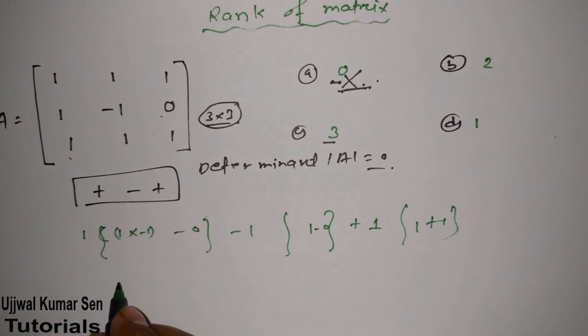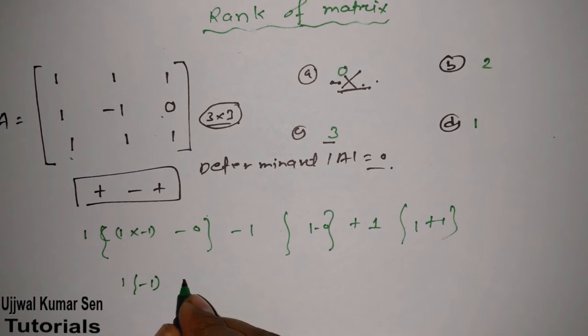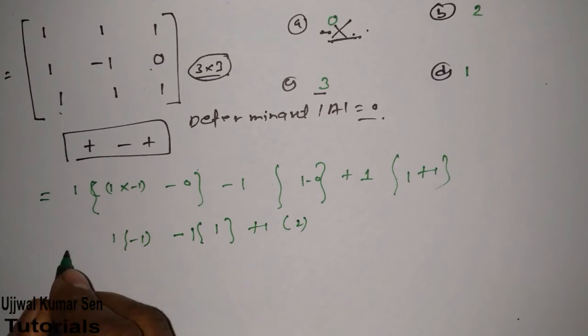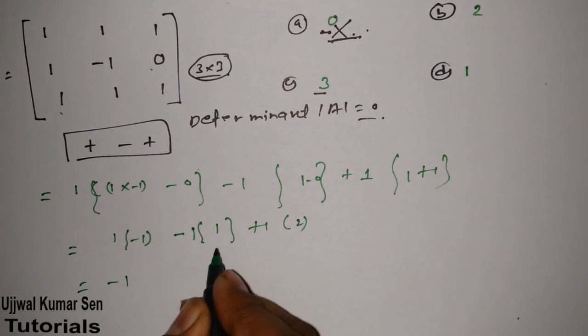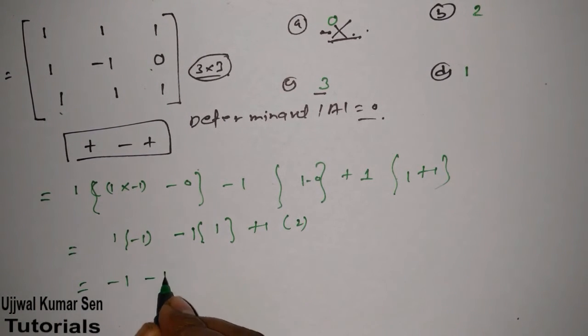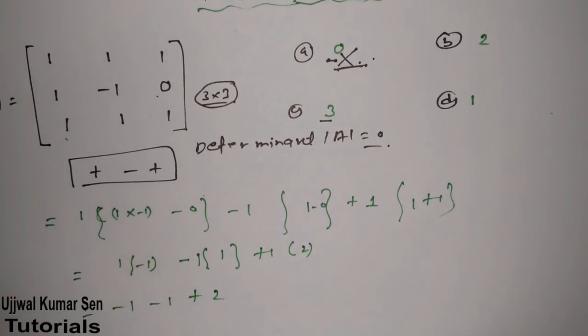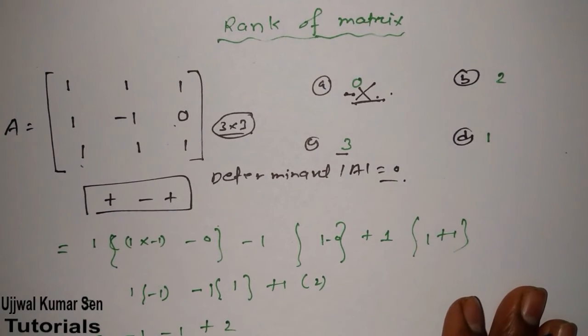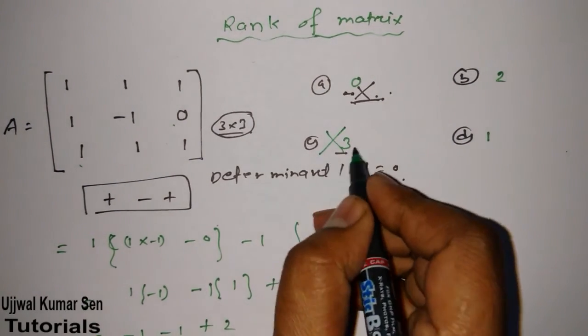This one will become minus 1 minus 1, minus 1 and 1 plus 1, multiplied by 2. So this will become 0. That means this matrix is not having a rank of 3. This is a wrong answer.